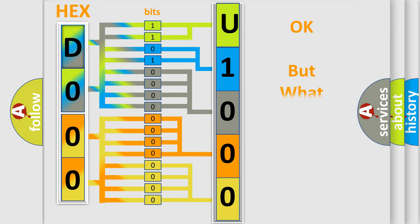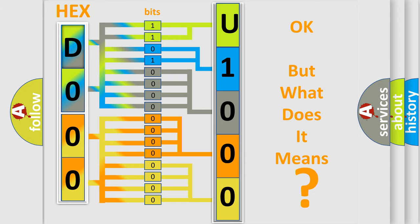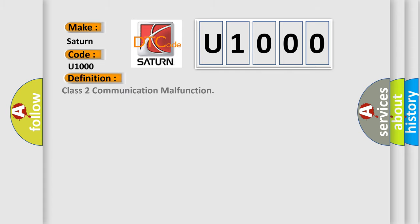The number itself does not make sense to us if we cannot assign information about what it actually expresses. So, what does the diagnostic trouble code U1000 interpret specifically, according to SAE and car manufacturers? The basic definition is: Class 2 communication malfunction.